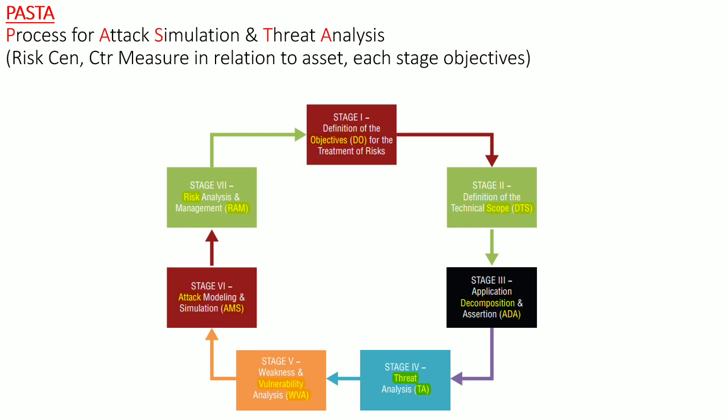The last threat modeling is PASTA — Process for Attack Simulation and Threat Analysis. It is risk-centric and you adapt countermeasures in relation to the value of an asset. It is a seven-stage process where each stage has specific objectives to complete before moving to the next. The first stage is definition of objectives for treatment of risk; second is definition of technical scope; third is application decomposition and analysis, also known as reduction analysis; and the fourth stage is threat analysis.